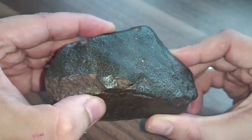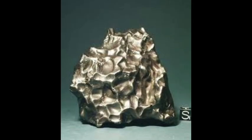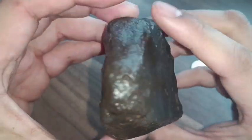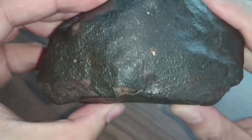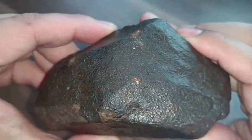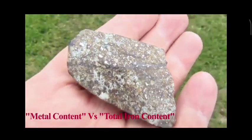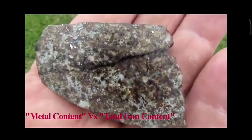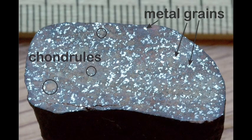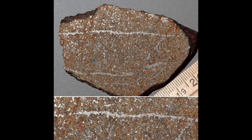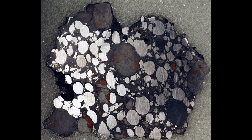Regmaglyps are formed when the meteorite's outer layers vaporize and erode away as it encounters the extreme heat and pressure of the atmosphere. The regmaglyps found on iron meteorites tend to be more well-defined and pronounced compared to those on stony meteorites due to the higher density and strength of the metallic composition. Metal content refers specifically to the amount of metallic grains, which are primarily composed of iron and nickel, that are present in the meteorite. These grains can be relatively large and are easily visible to the naked eye.